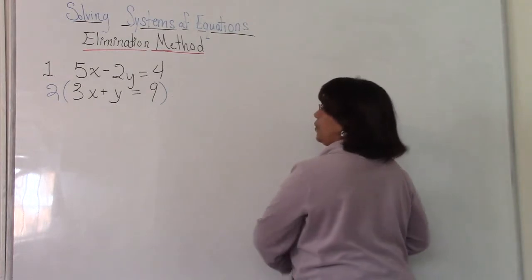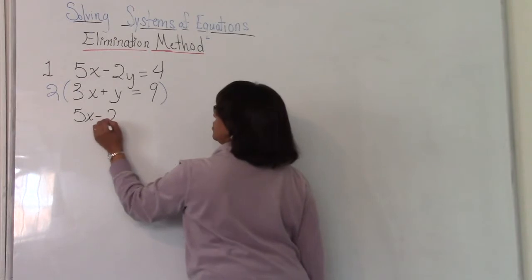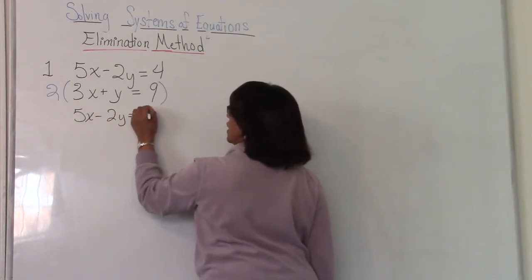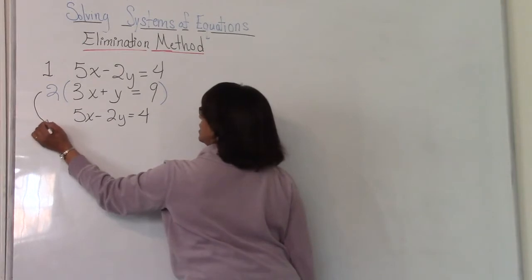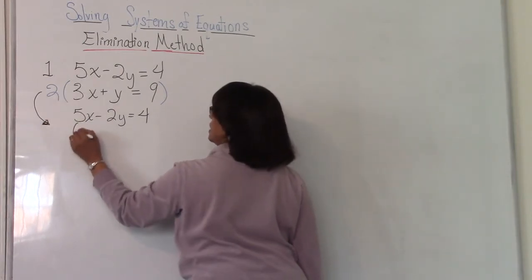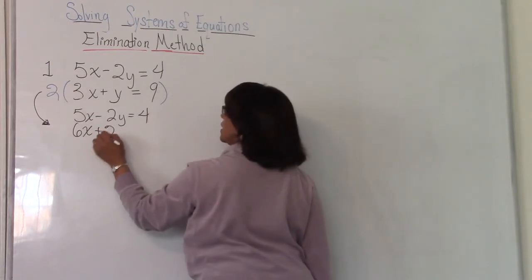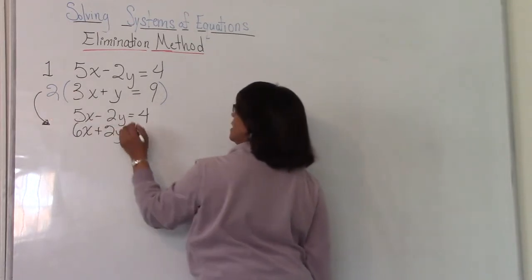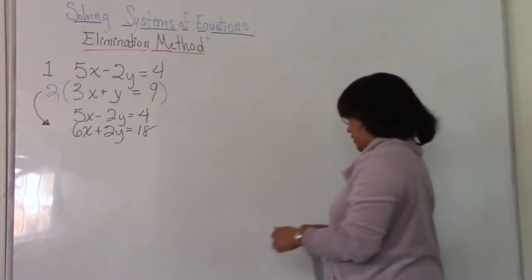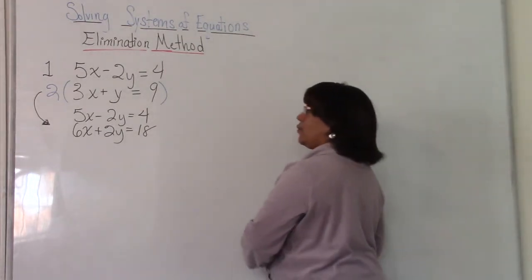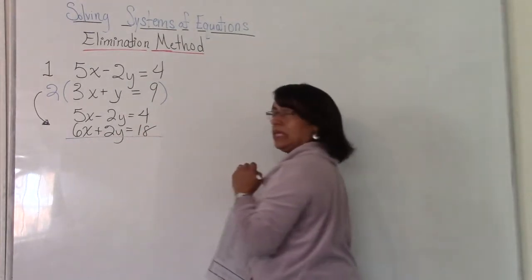I'm going to bring down this equation as is: 5x minus 2y is equal to 4. And I'm going to multiply everything here and then bring that equation down. 2 times 3 is 6x, distributive property. 2 times y is 2y. And 2 times 9 is 18. Don't forget you have to do it on all those numbers, on both sides of your equation.